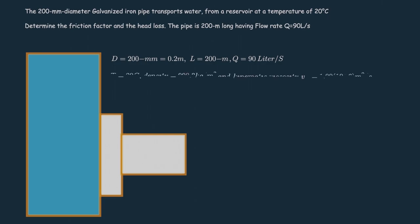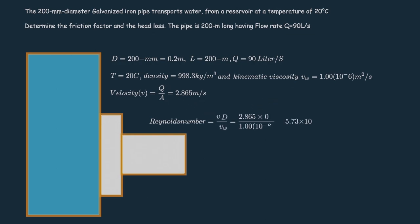The first step we do is get the physical property of water at temperature of 20 degrees Celsius. And the next step is to calculate the Reynolds number. It determines whether the flow is laminar or turbulent.